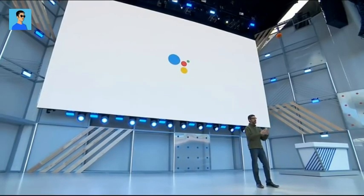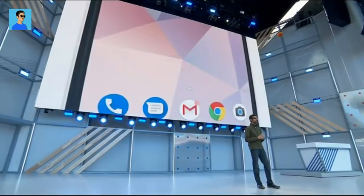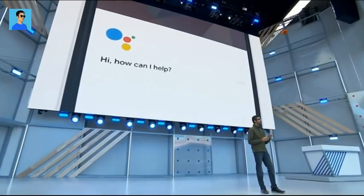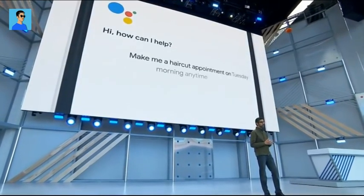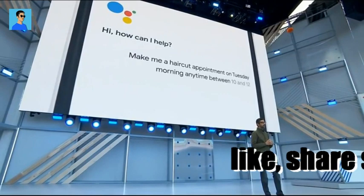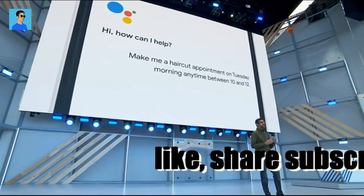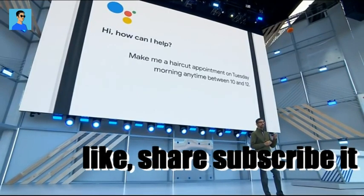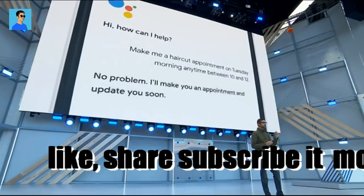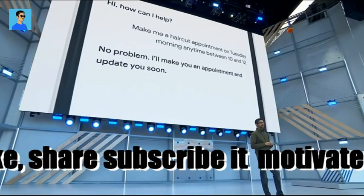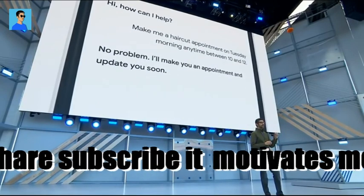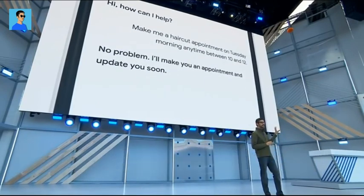So let's go back to this example. Let's say you want to ask Google to make you a haircut appointment on Tuesday between 10 and noon. What happens is the Google Assistant makes the call seamlessly in the background for you. So what you're going to hear is the Google Assistant actually calling a real salon to schedule the appointment for you. Let's listen.